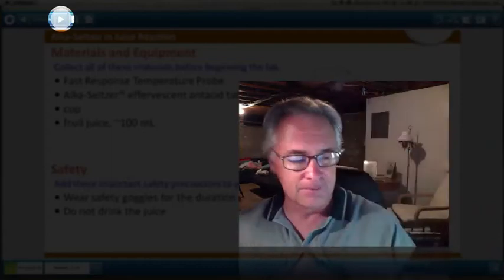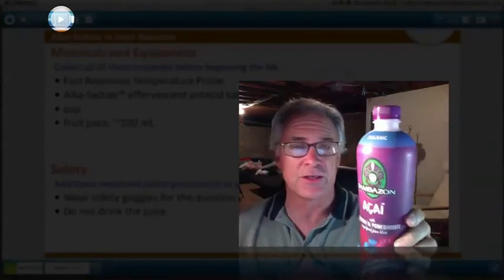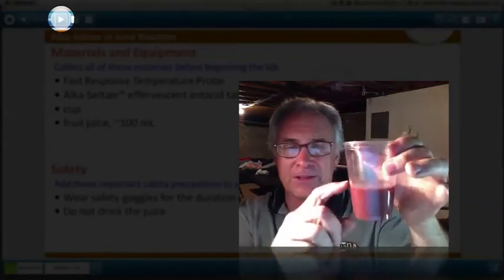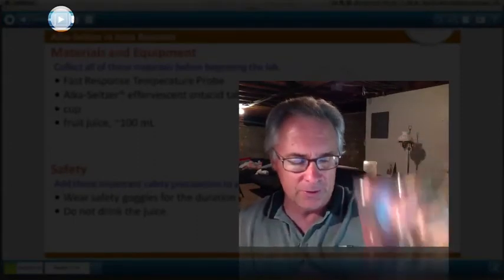Set that off to the side for a second. You'll need an Alka-Seltzer tablet. Obviously, you're going to need some juice. Not this particular juice, but any juice that's kind of acidic. And then this one right here. This is the cup. And this is how much you fill the juice with. Just about a third of the cup. So that's what we're going to be using today.